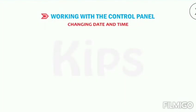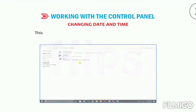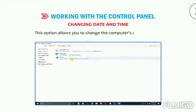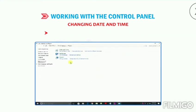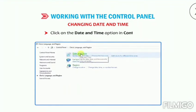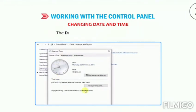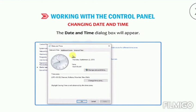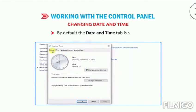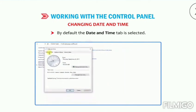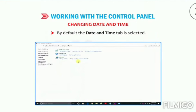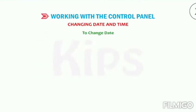Change the date and time — this option allows you to change the computer's date and time. Click on the Date and Time option in Control Panel. The Date and Time dialog box will appear. By default the Date and Time tab is selected. Click on the Change Date and Time button — the Date and Time Settings dialog box will appear.